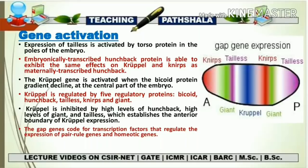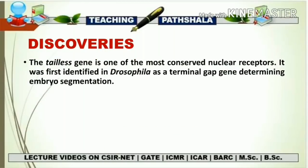Regarding the tailless gene: it is one of the most conserved nuclear receptors. It was first identified in Drosophila as a terminal gap gene determining embryo segmentation and plays its role in the generation of the tail in Drosophila. When there is a mutation in the tailless gene, the embryo forms without a tail. If the gene is normally expressed, a tail is formed; if mutated or absent, the embryo is tail-less. It has been discovered that tailless belongs to the nuclear receptor family and is highly conserved.